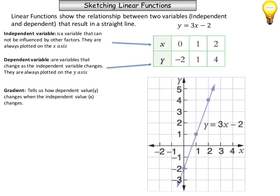The gradient is used to tell us how a dependent value changes when the independent value changes. For example, when you were doing your science experiment, for every minute that you had the Bunsen burner on underneath the water, by how many degrees did the temperature of that water rise? So as the time changed from one minute to two minutes, how much is the temperature going up? And if that was the same amount for every single minute, then that would give us a nice straight line with a gradient.